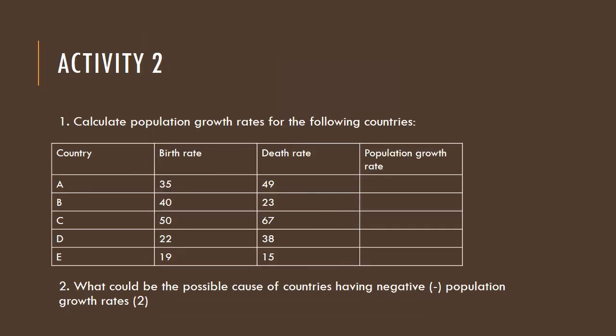Next we have Activity Two, which has quite a lot of calculations to really test whether you understood how to calculate population growth rates. Remember, the formula for calculating population growth rate is: Population Growth Rate = Birth Rate − Death Rate.